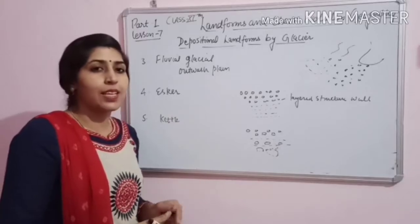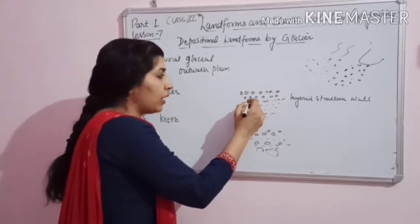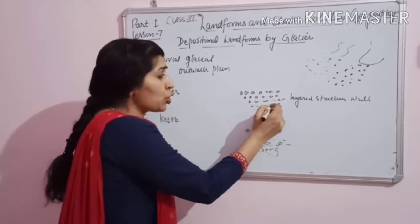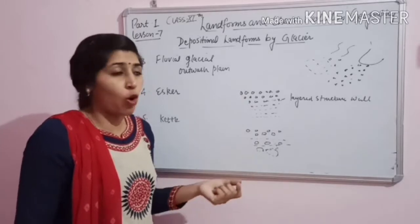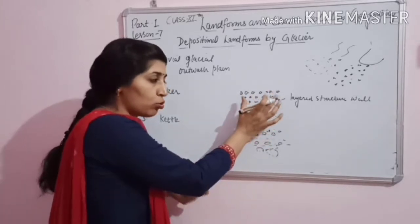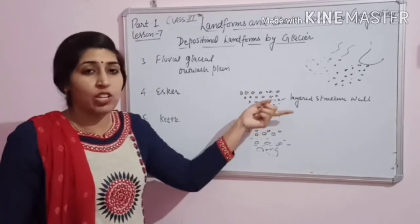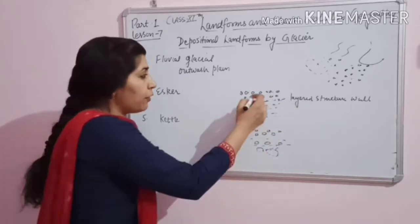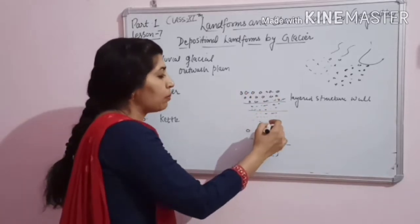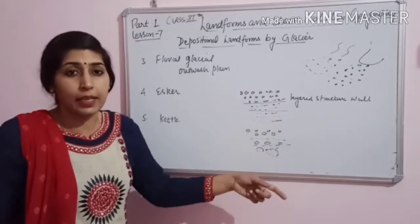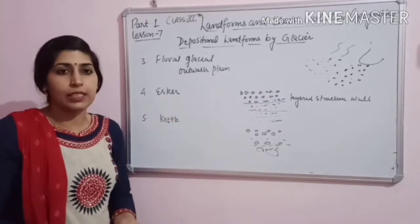Next structure is esker. The sediments start to deposit in a descending order — the largest pebbles and large rocks form one layer, then slightly smaller rocks, then progressively smaller, and a wall-like layer structure begins to form. You can see that here there are large pebbles, then smaller pebbles, then very small pebbles, then silt. These layers are called eskers.